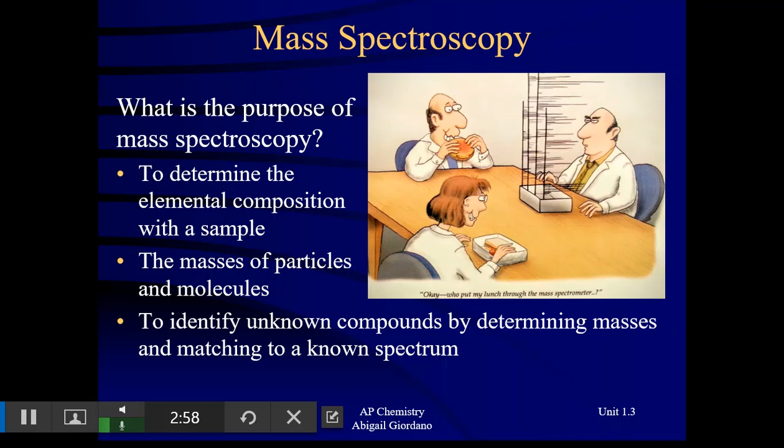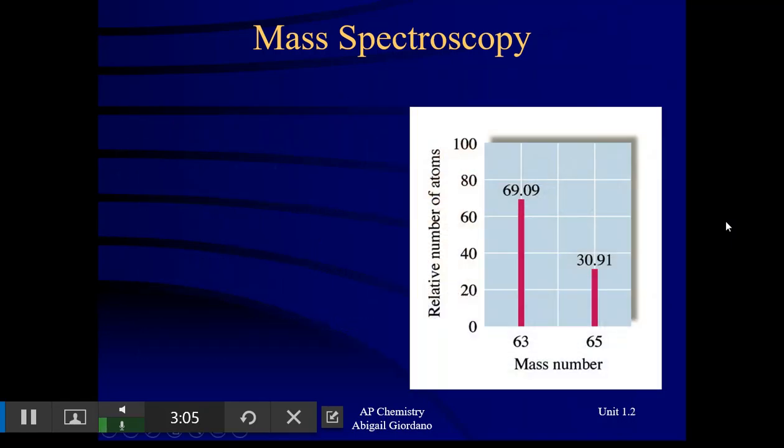So let's look at an example of a mass spectroscopy graph. This is a very simple one, but let's look at what's on the axes here. On the x-axis, you have mass number, and on the y-axis, you have relative number of atoms. Let's review from Chem 1, what does the term mass number mean? Mass number means the number of protons plus neutrons.